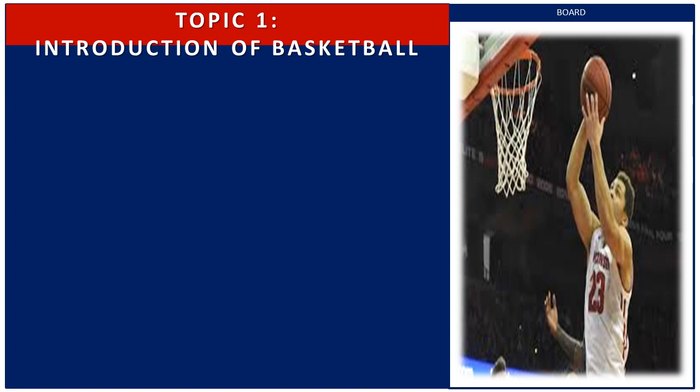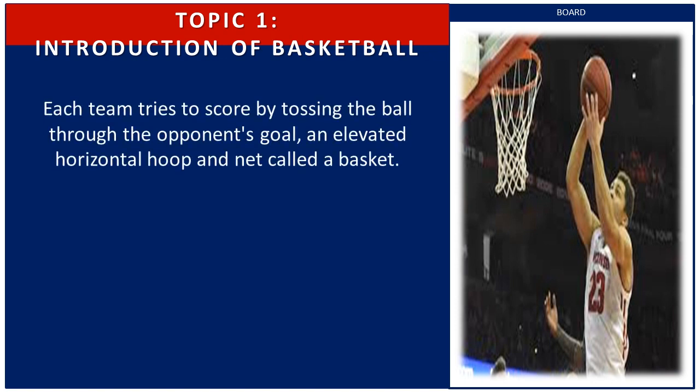Before anything else, let me ask you a question related to our topic. What do you think is a basketball game? Basketball is a game played between two teams of five players each on a rectangular court, and it is usually played indoors. Each team tries to score by tossing the ball through the opponent's goal — an elevated horizontal hoop and net called a basket.